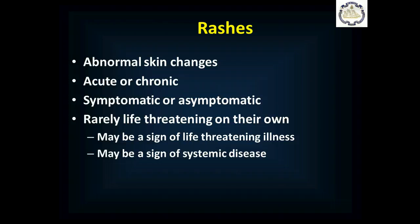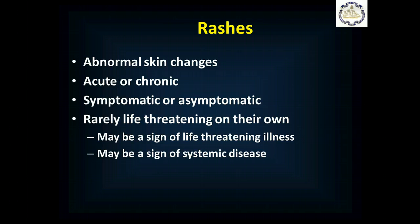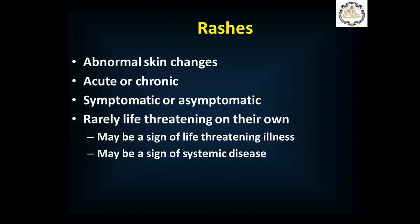So what's a rash? It's an abnormal skin change. They can be acute or chronic — we'll talk about acute ones here because that's what patients are going to come to you with. They can be symptomatic or asymptomatic. Unless the rash is so extensive it's like a burn and has destroyed so much skin that you can't control your temperature and are at risk for infection, very rarely are rashes in and of themselves life-threatening. But they can be signs of systemic illness, and they can even be signs of life-threatening disease.